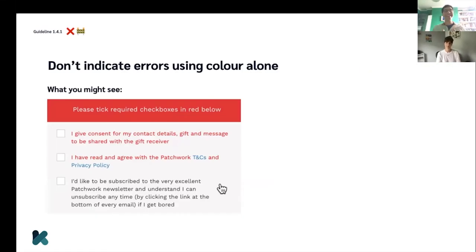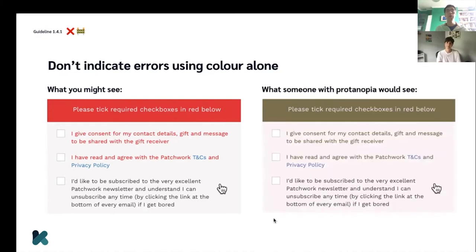Next: don't indicate errors using color alone. This is an example of terms and conditions on a website. I had forgotten to tick some mandatory checkboxes and pressed submit — it's telling me that there are some required checkboxes marked in red below. I happen to find it easy to see the difference between red and gray, but if you had protanopia, then it would be very, very hard to see what's in red and what's in black or gray. So don't indicate errors using color alone.